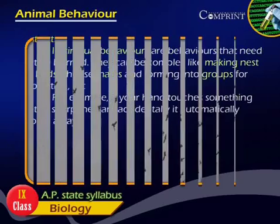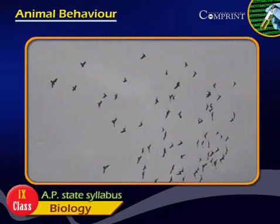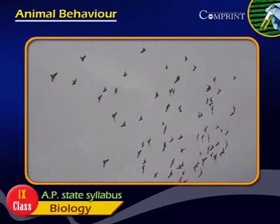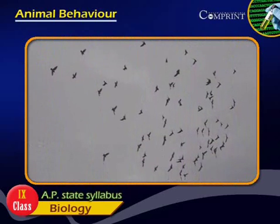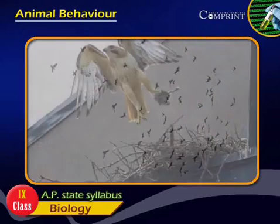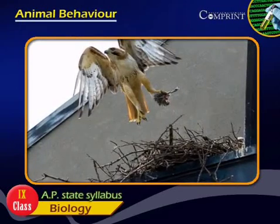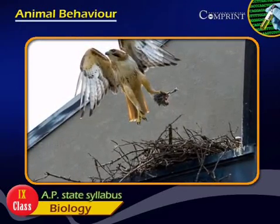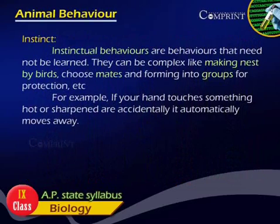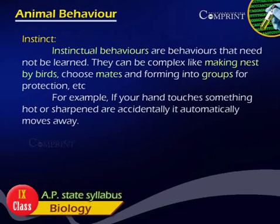Instinct. Instinctual behaviors are behaviors that need not be learned. They can be complex, like making nests by birds, choosing mates, and forming into groups for protection. For example, if your hand touches something hot or sharp accidentally, it automatically moves away.